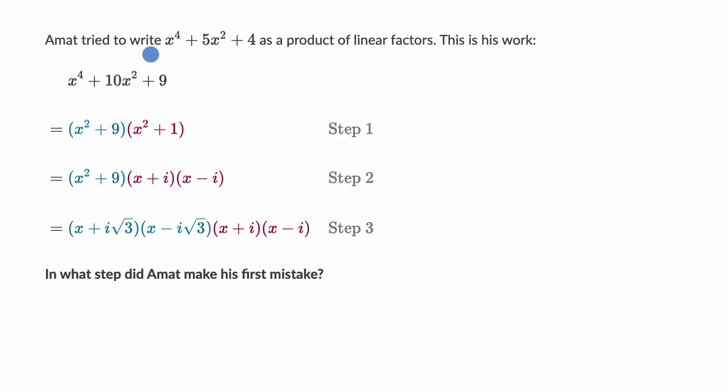We're told that Amat tried to write x to the fourth plus 10x squared plus 9 as a product of linear factors. This is his work, and then they tell us all of the steps that he did. And then they say, in what step did Amat make his first mistake? So pause this video and see if you can figure that out.